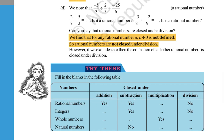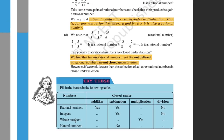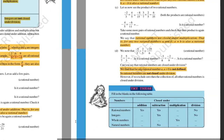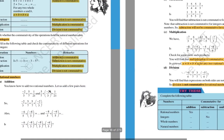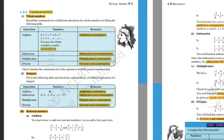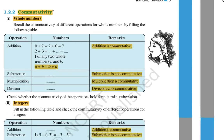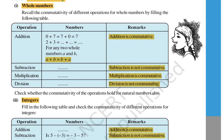So for rational numbers: addition — closure follows, yes; subtraction — yes; multiplication — yes; division — no. You have to fill this up for integers, whole numbers, and natural numbers and submit it to me.